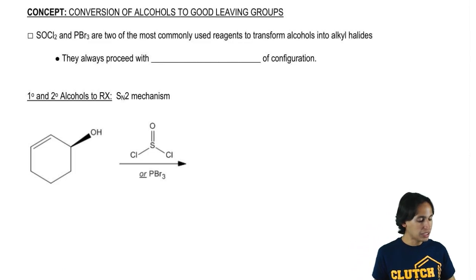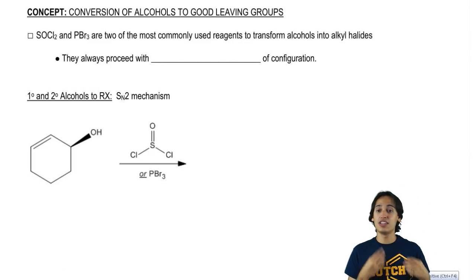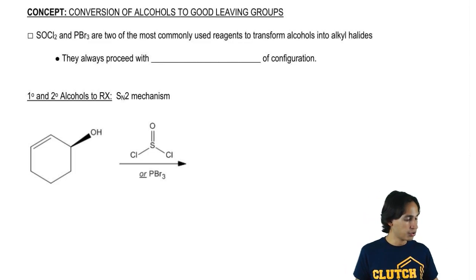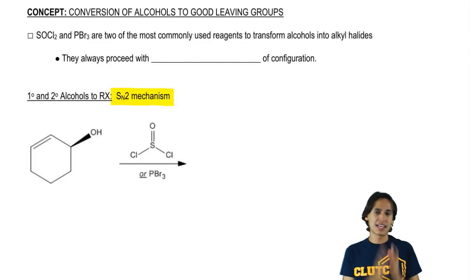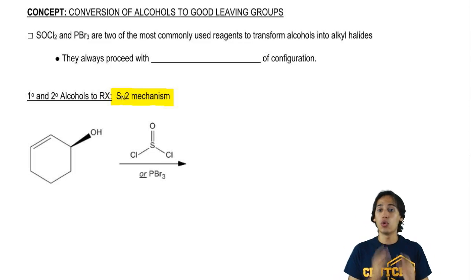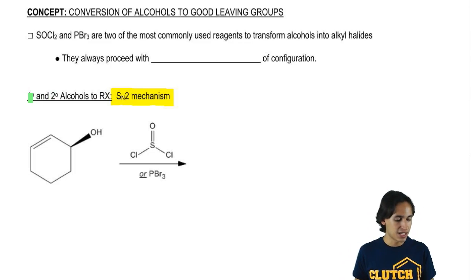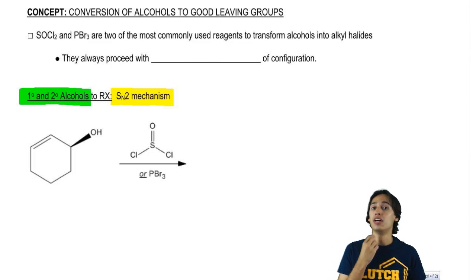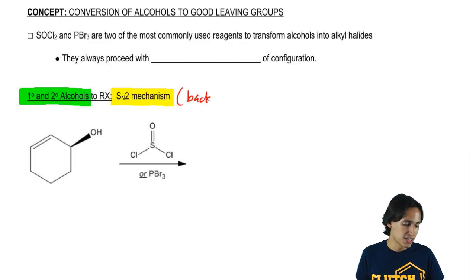The only thing special about these is that they always proceed through an SN2 mechanism. Since it's SN2 backside attack, these are limited to working on only primary and secondary alcohols. If I have a tertiary alcohol, I cannot use SOCl2 or PBr3 because I'm not going to get a backside attack. Remember that SN2 just means backside attack.